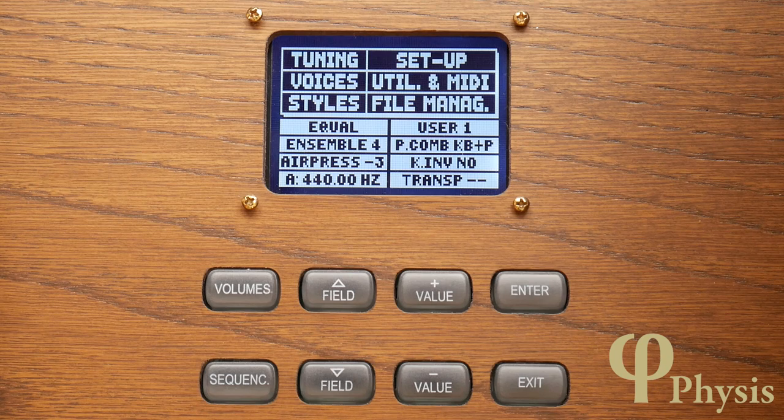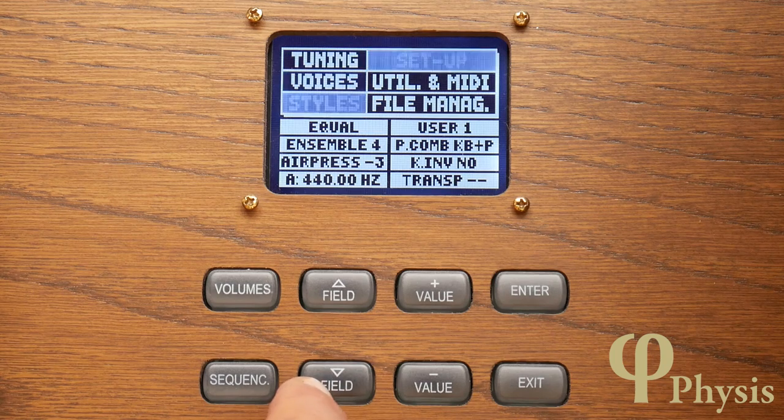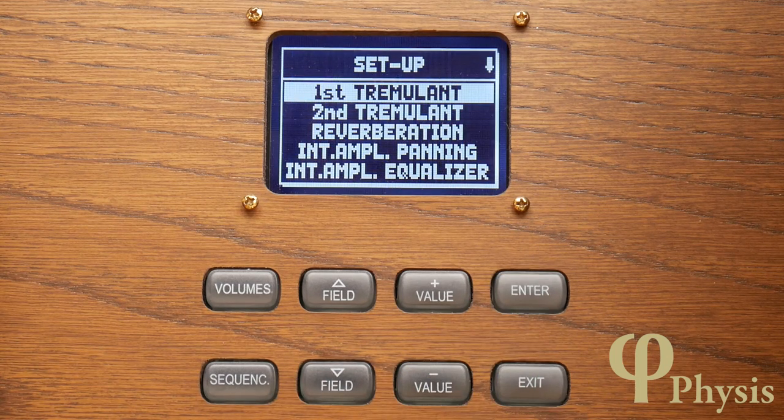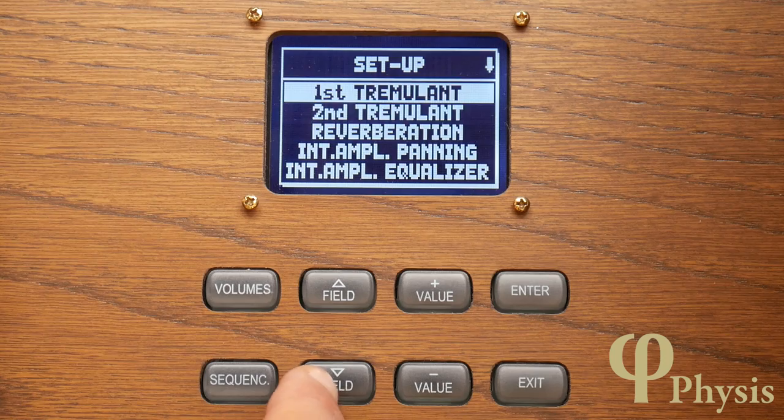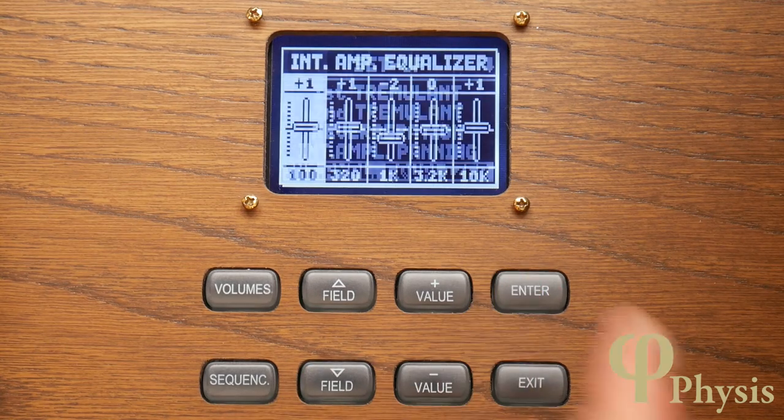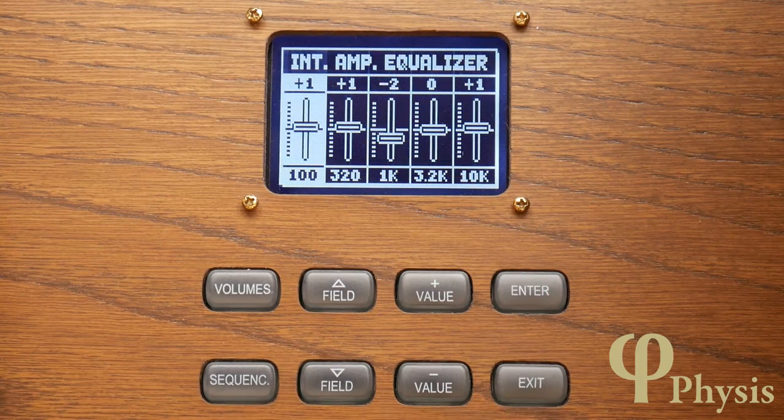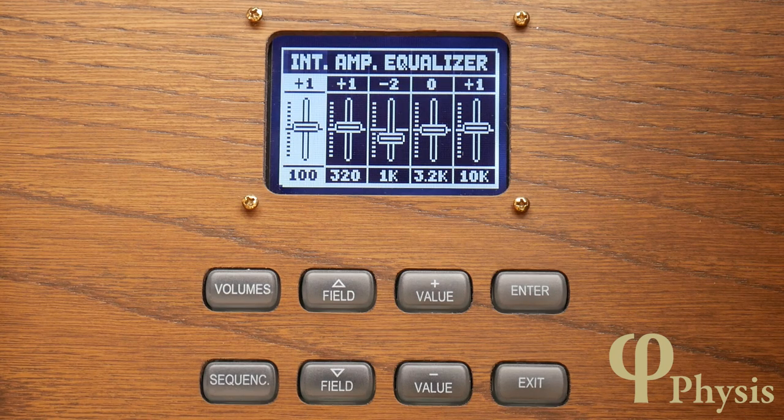The internal audio system's tonal balance can be adjusted using the 5-band equaliser that's accessed from the Setup menu. You can scroll down here to the internal amplifier equaliser and here you'll see that there are 5 sliders.